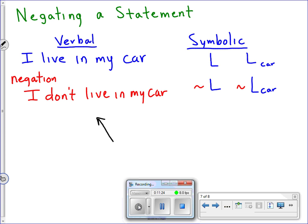Okay? All right. Let's see if we can understand this real quick. Negating a statement. Okay? So this is what I call the verbal form of my statement. I live in my car. This is the symbolic. I could just write an L. I could write an L with a little car. I could just write the car or whatever. Right? And so the negation of that is I don't live in my car. And so this could be the negation of that symbol or the negation of that symbol.